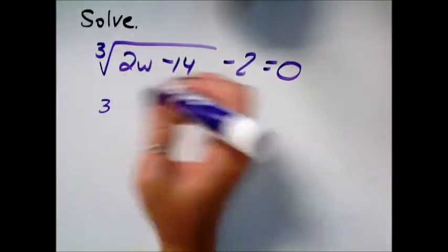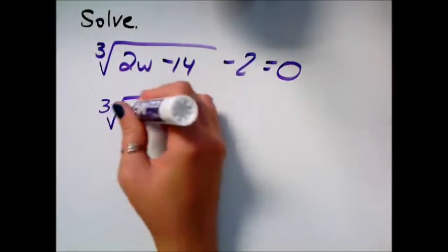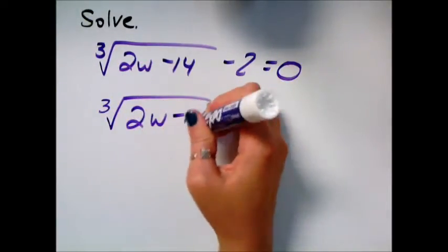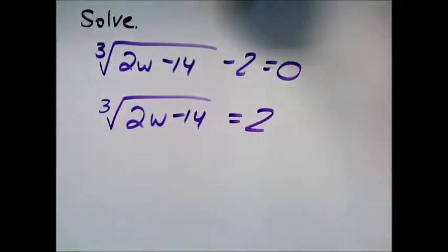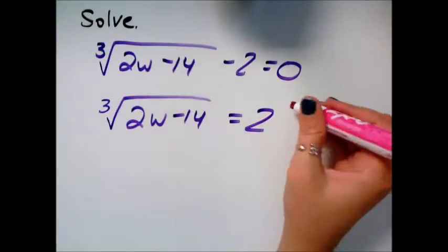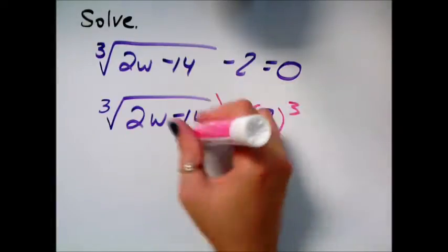So it looks like on this one I can add this 2 to the other side. And now to get rid of the third root, I'll put both sides to the third power. So all of both sides.